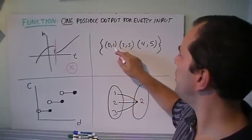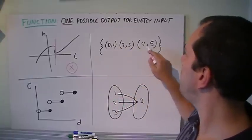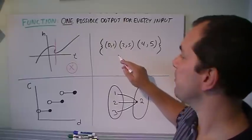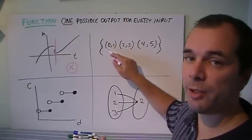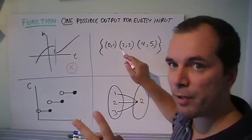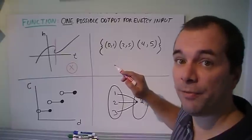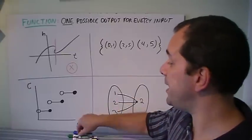What about this one? 0 and 1, 2 and 5, and 4 and 5. Well, the 5s are repeating. However, if you give me 0, the only choice I can give you for an output is 1. If you give me 2, the only choice I can give you for an output is 5. And if I give you 4, the only choice I can give you for an output is 5. Again, therefore this is a function.